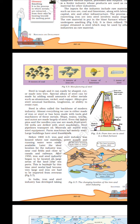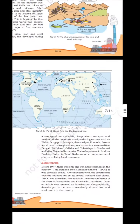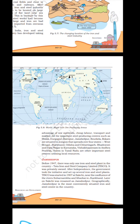In India, the iron and steel industry developed taking advantage of raw materials, cheap labour, transport and market. All important steel producing centres such as Bhilai, Durgapur, Burnpur, Jamshedpur, Rourkela and Bokaro are situated in a region spreading over four states — West Bengal, Jharkhand, Odisha and Chhattisgarh. Bhadravathi and Vijayanagar in Karnataka, Visakhapatnam in Andhra Pradesh, and Salem in Tamil Nadu are other important steel centres utilising local resources.